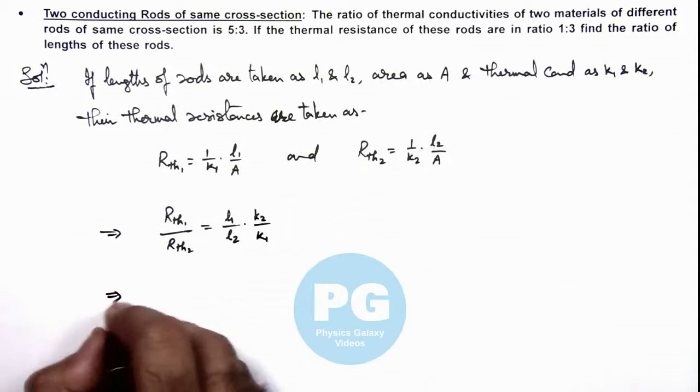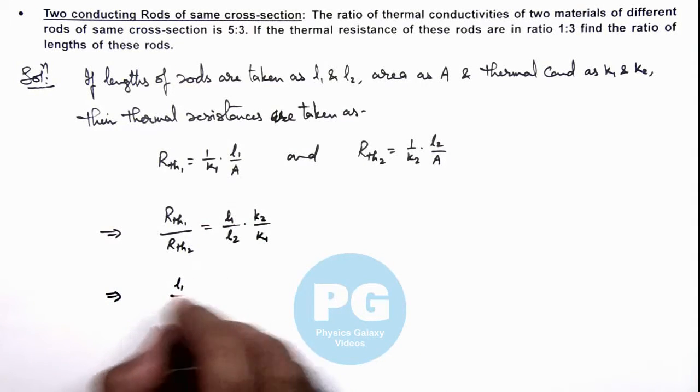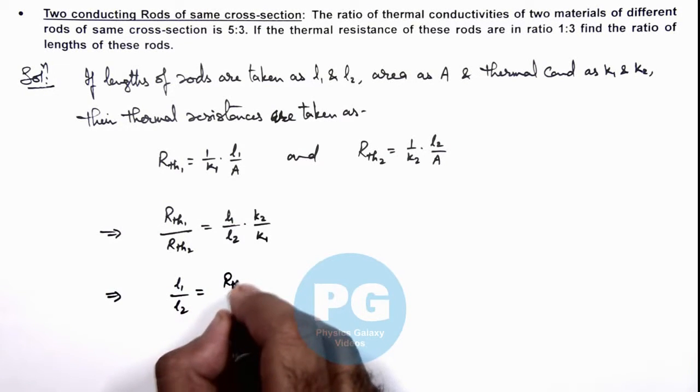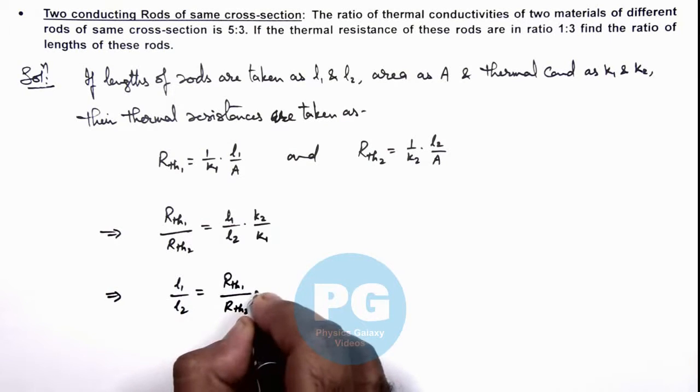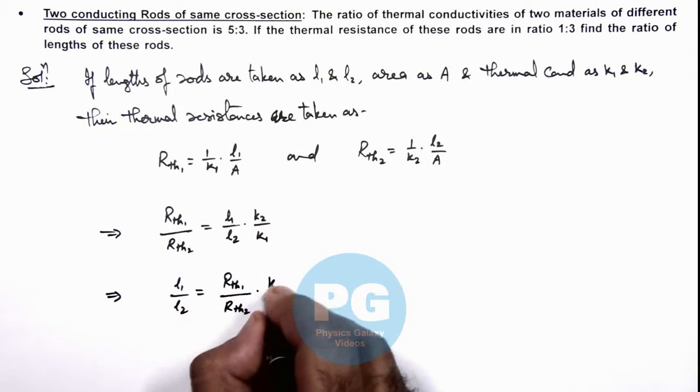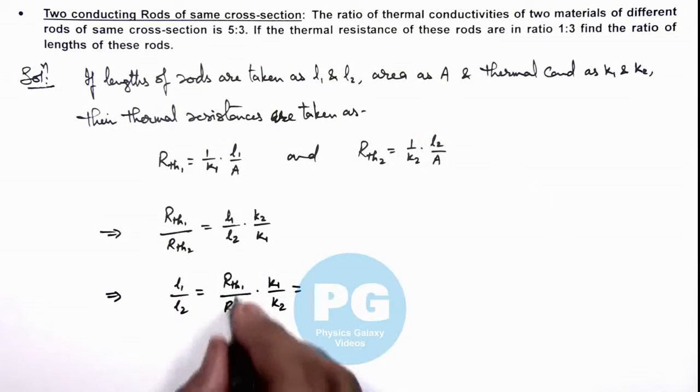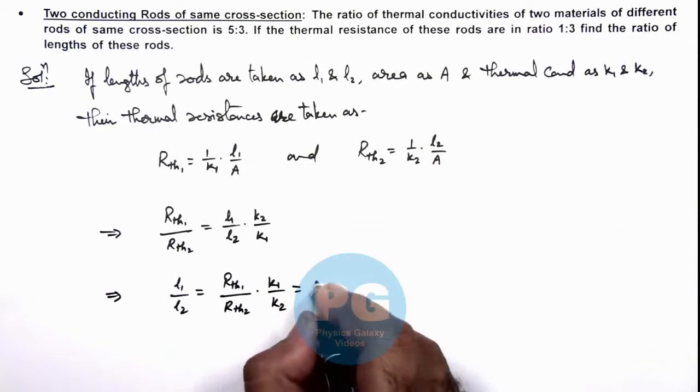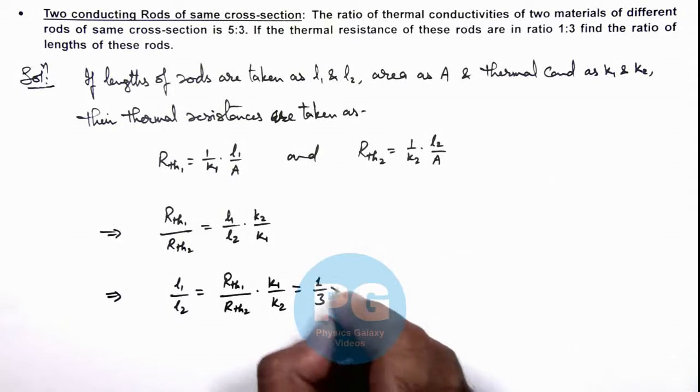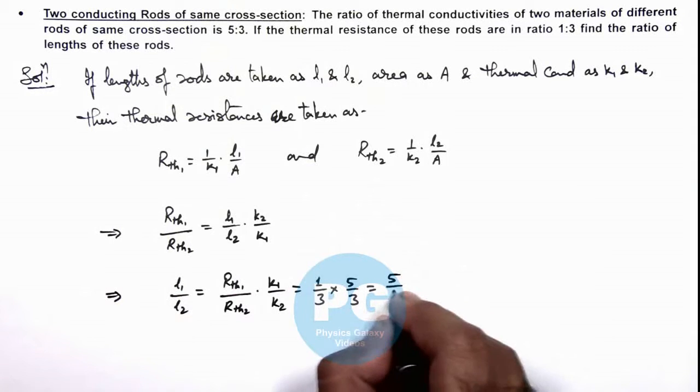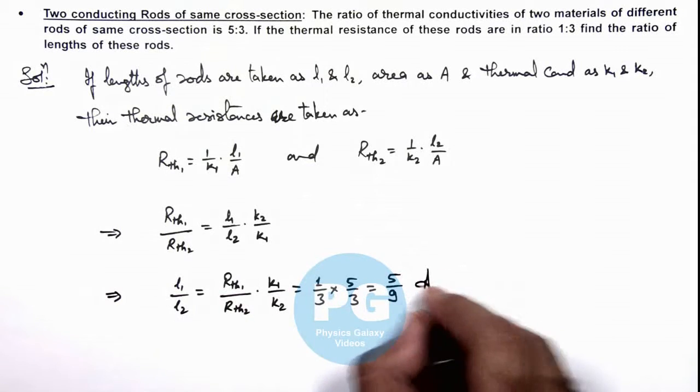From here we can get the ratio of lengths l₁/l₂, which is equal to (R_thermal1/R_thermal2) × (k₁/k₂). The ratios we are already provided: thermal resistances are 1/3, multiplied by k₁/k₂ is 5/3. So the ratio we are getting is 5/9 for the lengths - that is the result of this problem.